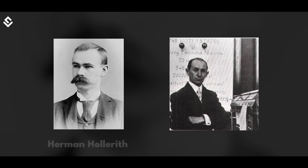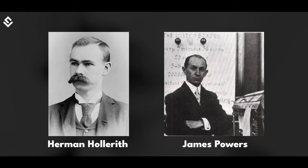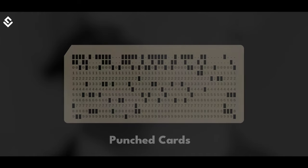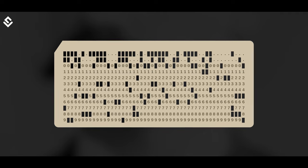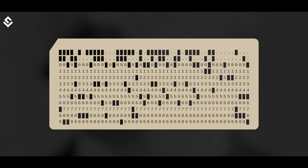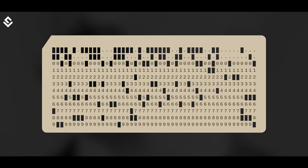A major step in the evolution of computers came when Herman Hollerith and James Powers, working from the US Census Bureau, invented the punched cards. A punched card is a piece of stiff paper that holds digital data represented by the presence or absence of holes in predefined positions. With the help of punch cards, the programming code could be stored in those computers, making the mechanical operations fully automatic.